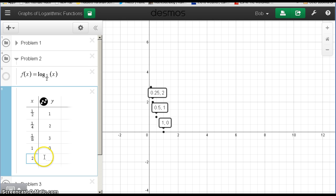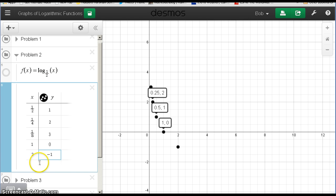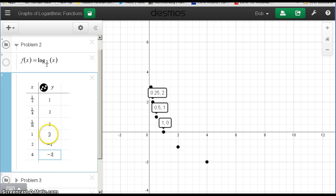How about 2? Log base 1 half of 2. So 1 half to some power equals 2. Well that's just a reciprocal, so that's negative first power. How about 4? 1 half to the fourth, that's going to give us negative 2. We get an idea of what's happening here. We can see that the graph here now dips down like this. And again it will not cross the y-axis.